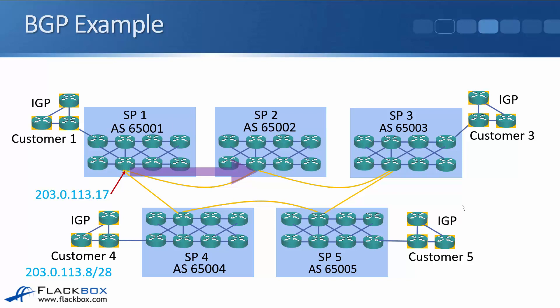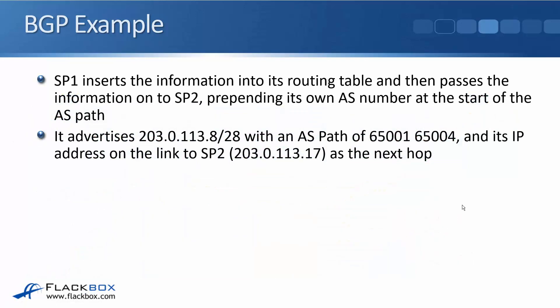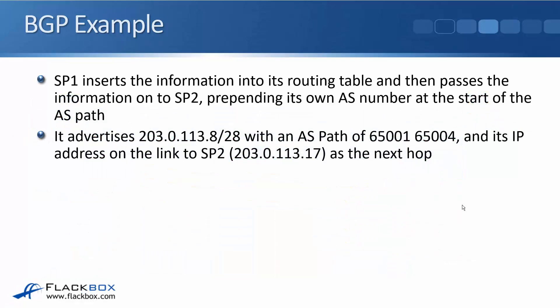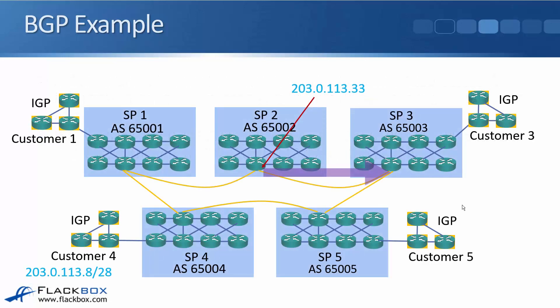SP1 learns how to get to 203.0.113.8 via SP4 with AS65004 and puts that into its routing table. Because it also has a BGP relationship with SP2 (AS65002), it passes the information on. When it does, it prepends its own AS number onto the AS path, so the path becomes 65001 65004, with next hop 203.0.113.17.